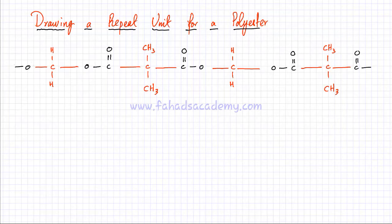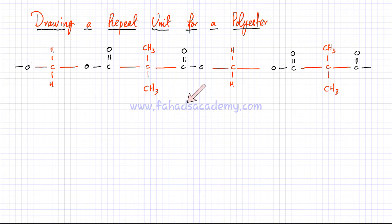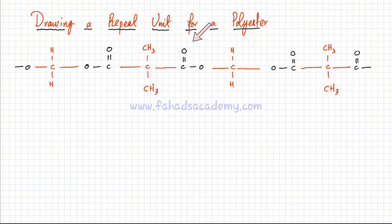In this lecture we're going to learn how to draw a repeat unit for a polyester. I've drawn one of the polyesters we did earlier as an example. In black there are ester links joining the monomer units together, so the individual molecules have been joined to form a polyester.